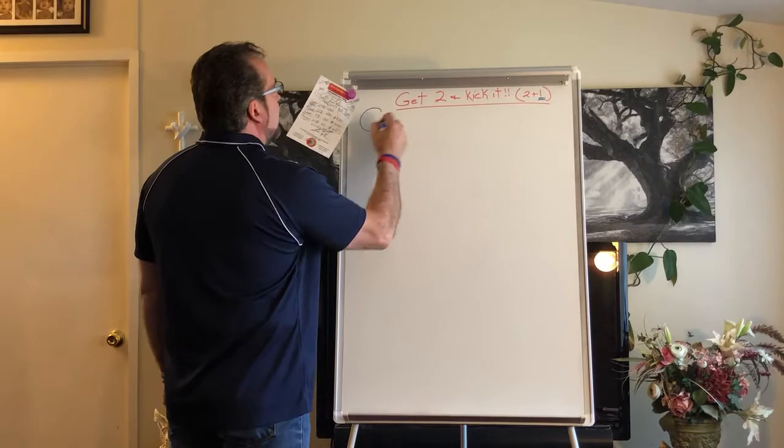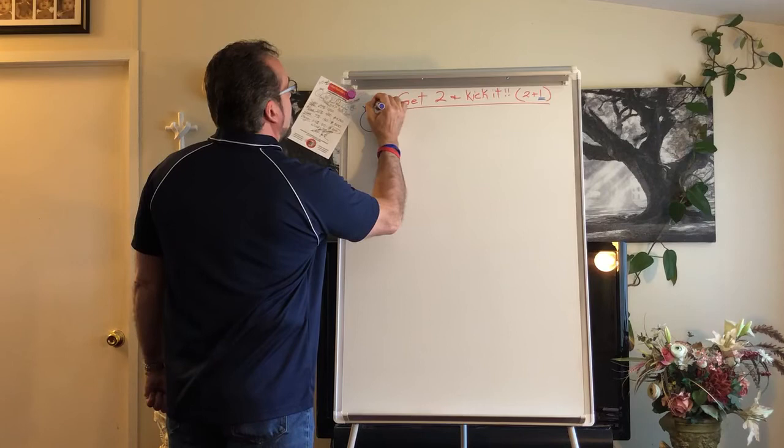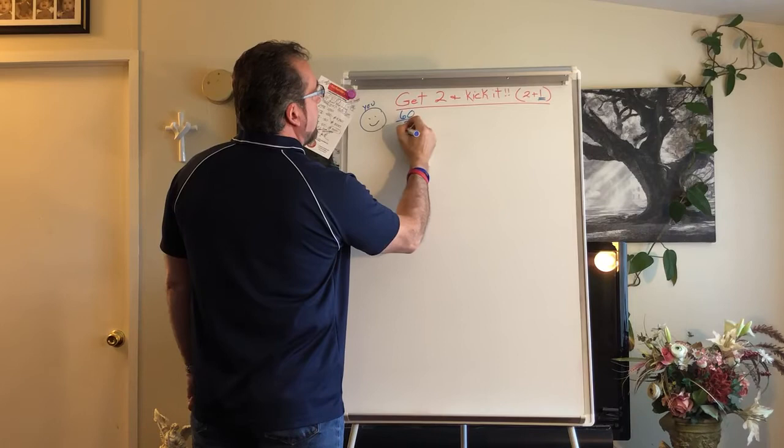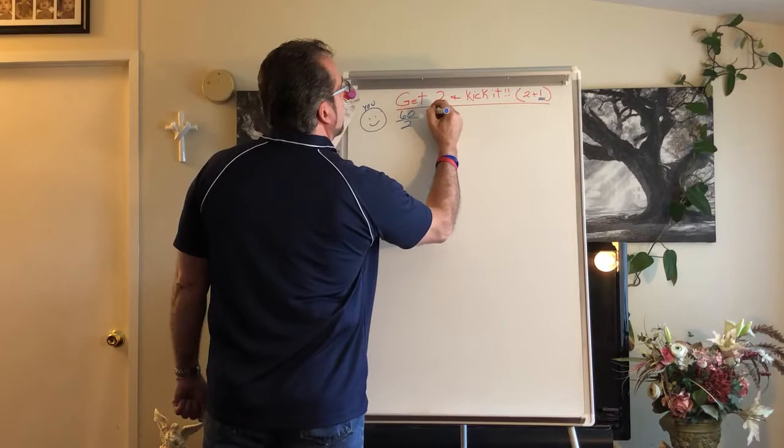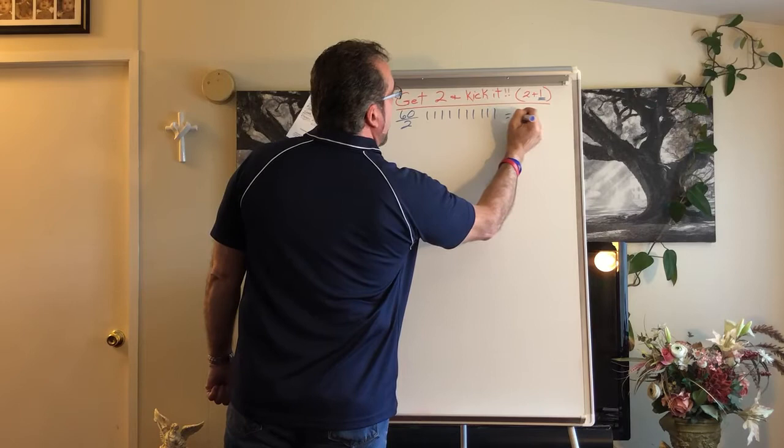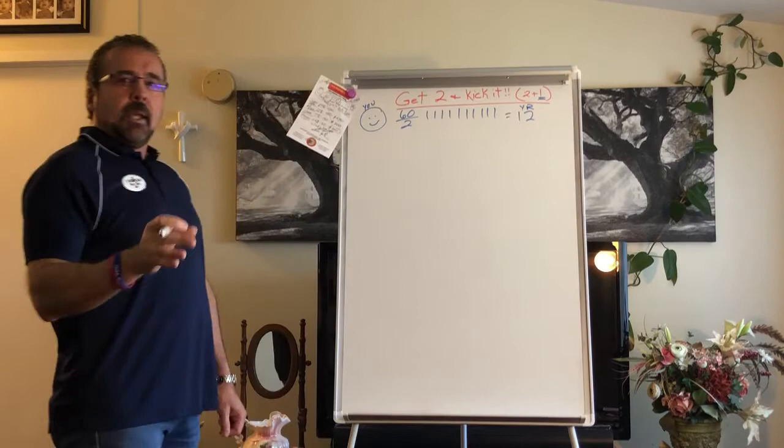So we're going to start out with you - you're happy, you just got in a new business. We're going to put the number 60 right here, then we're going to put the number 2 under it. And what that means is you're going to get your first two people partnered with you in 60 days, and then we're going to hang out for another 10 months. That's going to equal 12 months or a year.